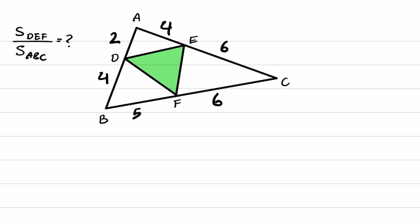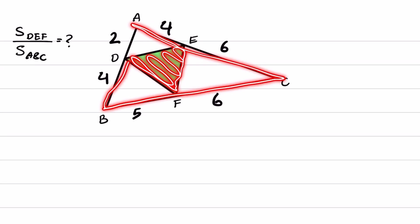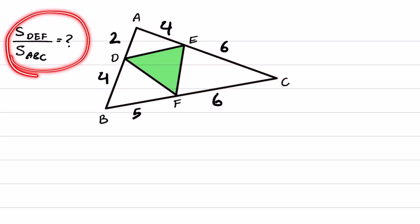triangle ABC is given and the sides of this triangle are connected to each other to form triangle DEF. The sides in this triangle are given as AD = 2, DB = 4, AE = 4, EC = 6, CF = 6, FB = 5.